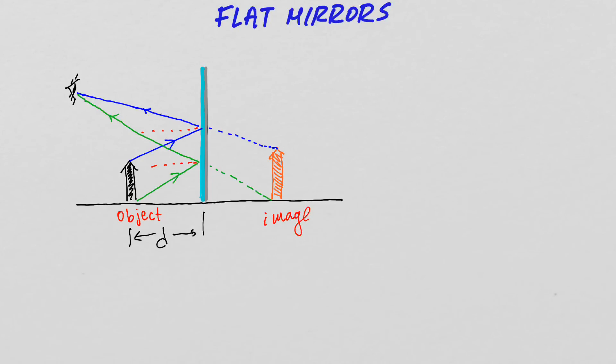And for the observer right here, it will look as if the object is actually located behind the mirror, which we know is physically impossible, since this here is a reflective surface. It's not transparent. Furthermore, it turns out that the distance from the image to the mirror is also equal to D.